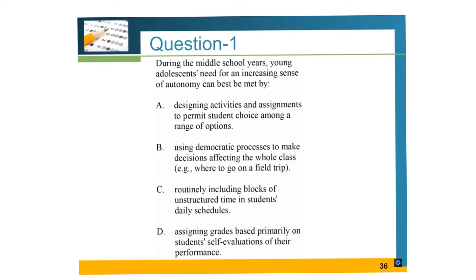Let's go ahead and look at the first question. When we try to solve these questions, we may need to highlight some of the keywords in the passage. Some of them are 'middle school years' and 'sense of autonomy,' which is basically a feeling of having choices. In order to increase sense of autonomy for middle school students, we need to provide students with options so that they can make choices. Answer choice A: designing activities and assignments to permit student choice among a range of options — this is the key vocabulary: student choice among a range of options.